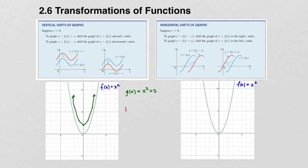Likewise, if I was graphing h(x) = x² - 3, this is going to be a vertical translation of the graph downward 3 units. So the point at the origin will shift down to (0, -3), and correspondingly the rest of the points will shift down 3 units as well. All three of these graphs have the exact same shape — they've just been shifted vertically, either up or down, by the specified amount.